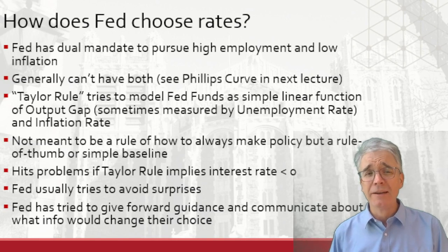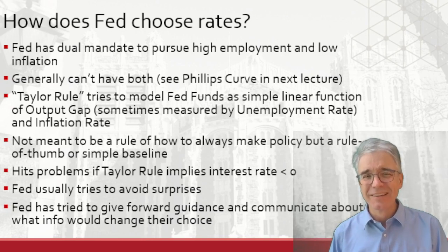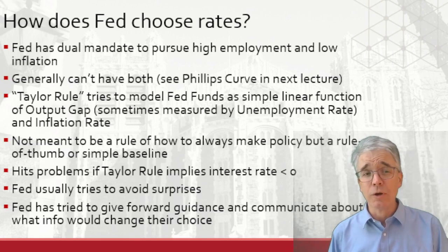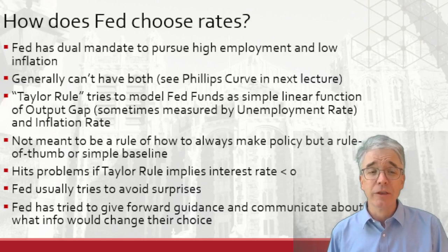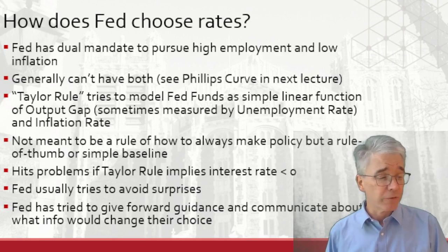One of the problems the Fed had after the financial crisis in 2008 was that the rule implied interest rates less than zero — that's kind of tough to do. The Fed usually tries to avoid surprises. It tries to signal ahead what it's going to do through what's called forward guidance. Sometimes they note what new information would change their choice — they might say, we're currently holding rates steady, but if blank happens, then we could raise rates. That kind of if-then statement is designed to help with predictability, although it's also sensitive to news.